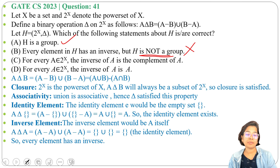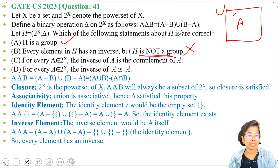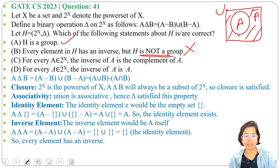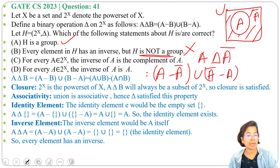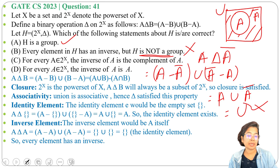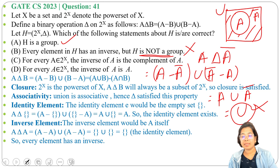Option C: for every A belonging to 2^X, the inverse of A is the complement of A. Let's check using a Venn diagram. A del A_complement equals (A minus A_complement) union (A_complement minus A). A minus A_complement equals A, and A_complement minus A equals A_complement. So we get A union A_complement, which is the universal set — but we should get the empty set. Hence option C is wrong.